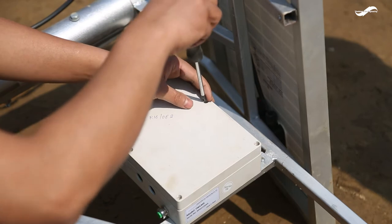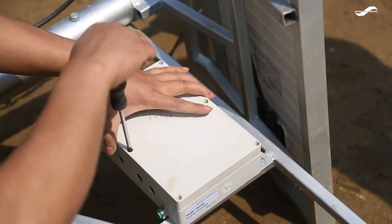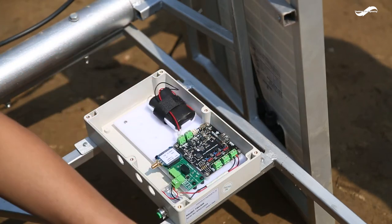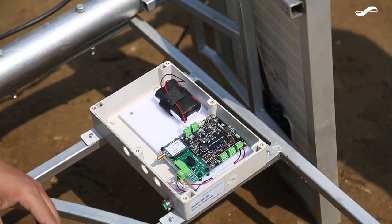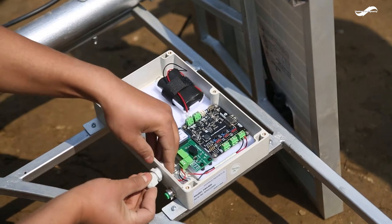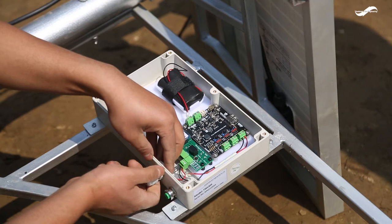Remove the cover of the data acquisition unit box. Place the gland on the bottom of the data acquisition unit.